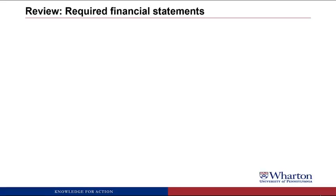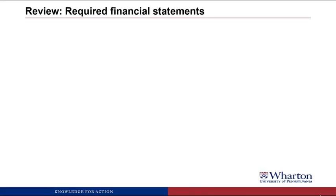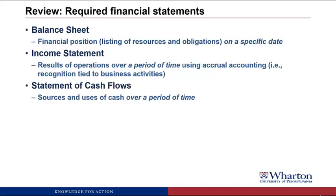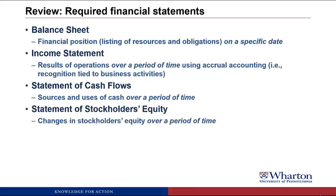Let's start with a quick review of the required financial statements that we talked about last video. There's a balance sheet, which gives you a firm's financial position — a listing of resources and obligations on a specific date. An income statement, which is the result of operations over a period of time using accrual accounting, where we tie recognition to business activities. This was different from the statement of cash flows, which gives you sources and uses of cash over a period of time. And then the statement of stockholders' equity, which gives you changes in stockholders' equity over a period of time, which we ignored last video and will get to later on.